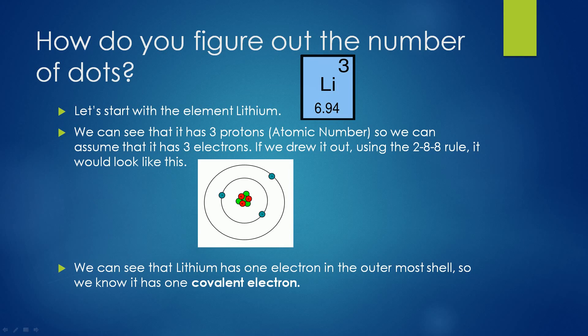How do you figure out the number of dots? Let us start with the element lithium. We can see that it has three protons — that is the atomic number — so we can assume that it has three electrons. If we draw it out using the 2-8-8 rule, we can see that lithium has one electron in the outermost shell. So we know it has one valence electron.